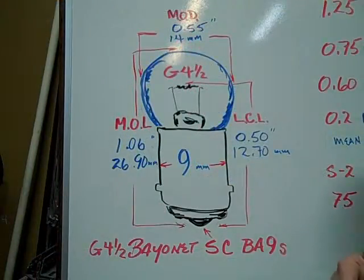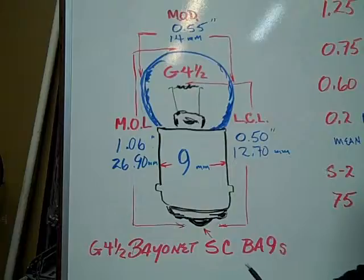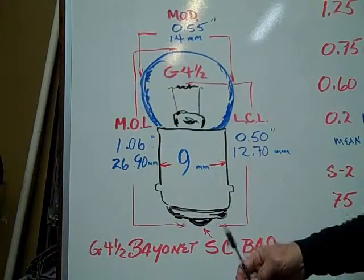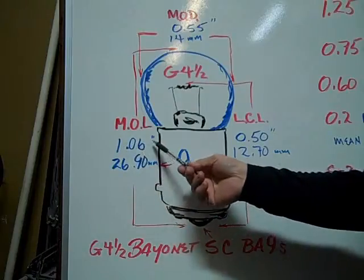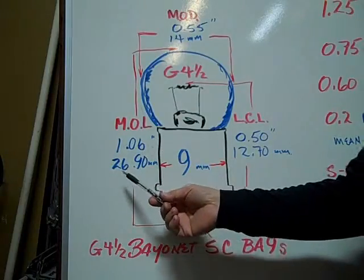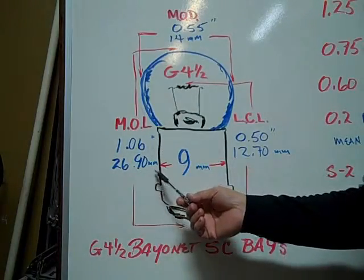The G-4.5 bayonet single contact BA9S based bulb has a maximum overall length of 1.06 inches, 26.90 millimeters.